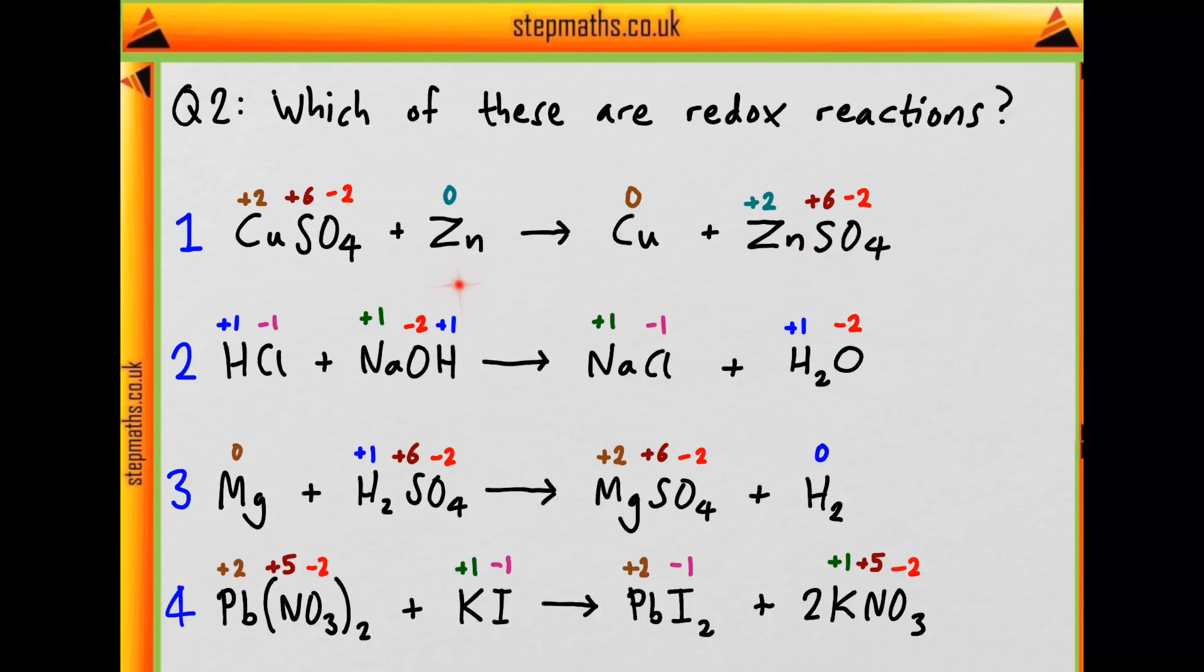So we've assigned all the oxidation states, which is maybe overkill for this question, but we can at least be sure that we can see if anything's being reduced or oxidized. So firstly, what about reaction one? Well, copper is going from plus two to zero, so it's being reduced. And what about zinc? It's going from zero to plus two and it's being oxidized. So this is indeed a redox reaction.